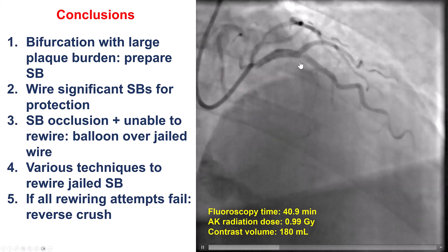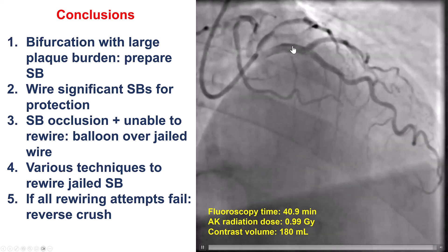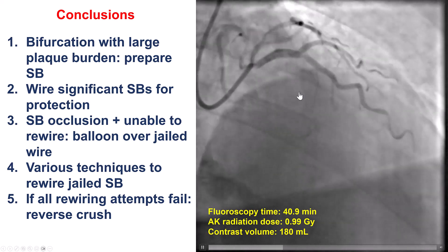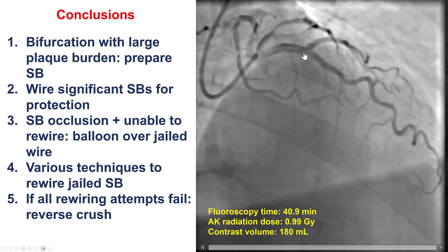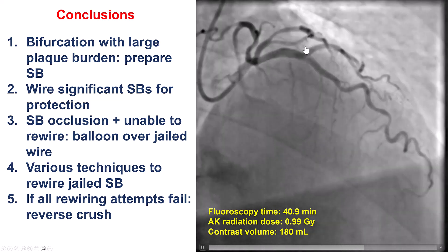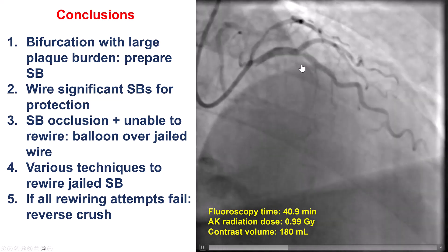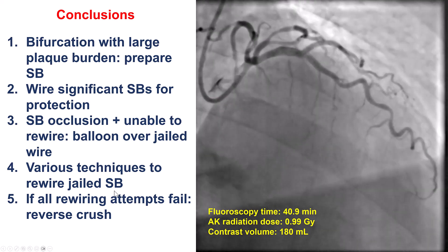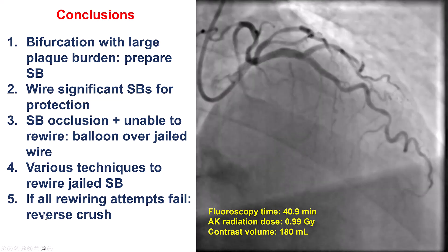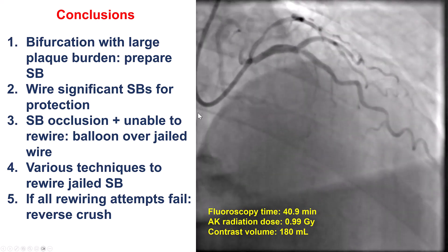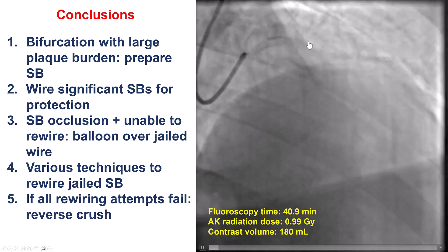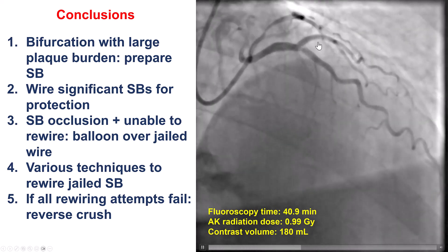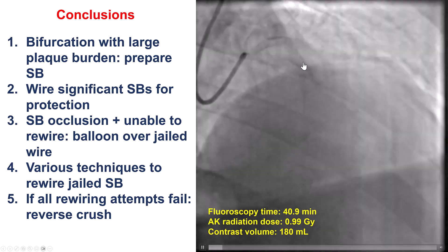We used various techniques including an angulated microcatheter, a dual-lumen microcatheter, a blocking balloon, and the reverse guidewire technique, but were still unable to advance a guidewire into the diagonal branch. That is why we resorted to the reverse crush technique. This is a technique we don't commonly use because we are essentially crushing the main vessel's stent, but in this case it was the only way to achieve flow into both the diagonal and the LAD.